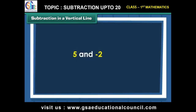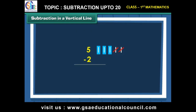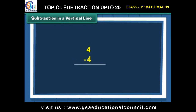Let us find five minus two. Draw five lines next to five. Cross out two lines to subtract two. Count the remaining vertical lines. Therefore, four minus four is zero.